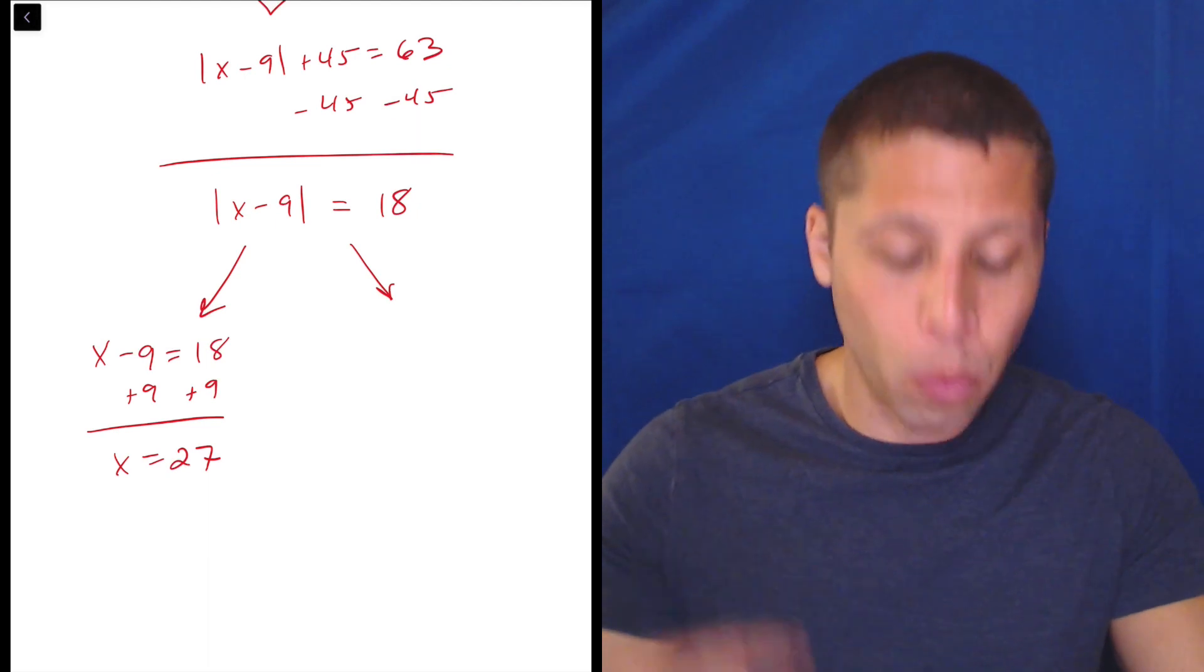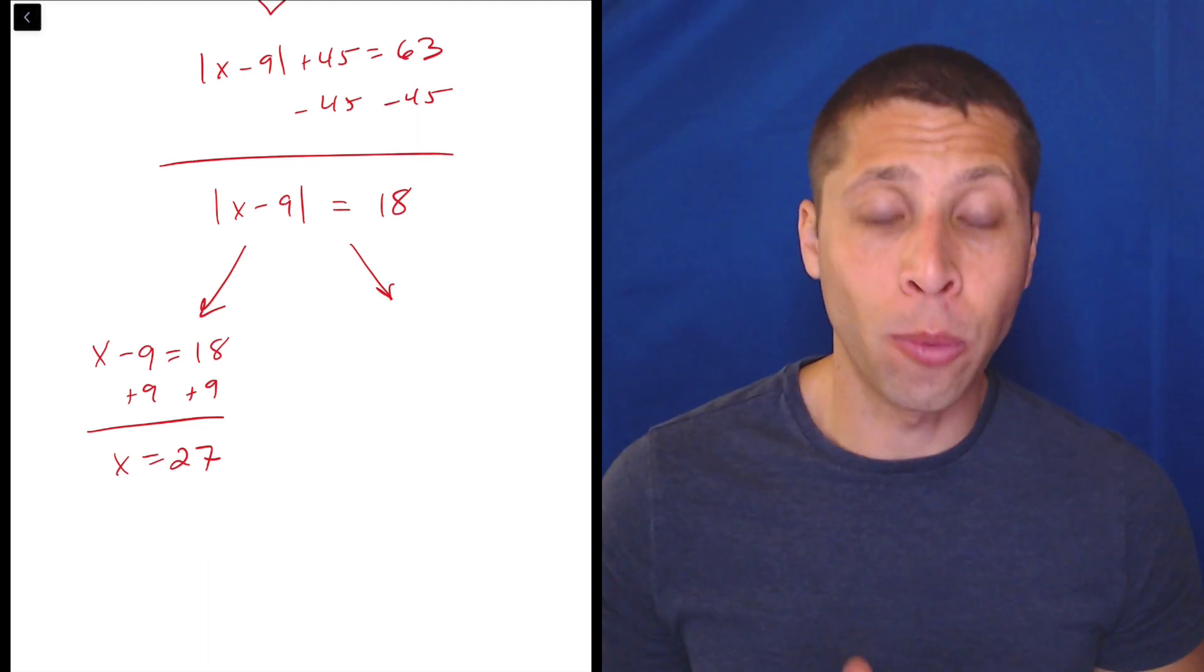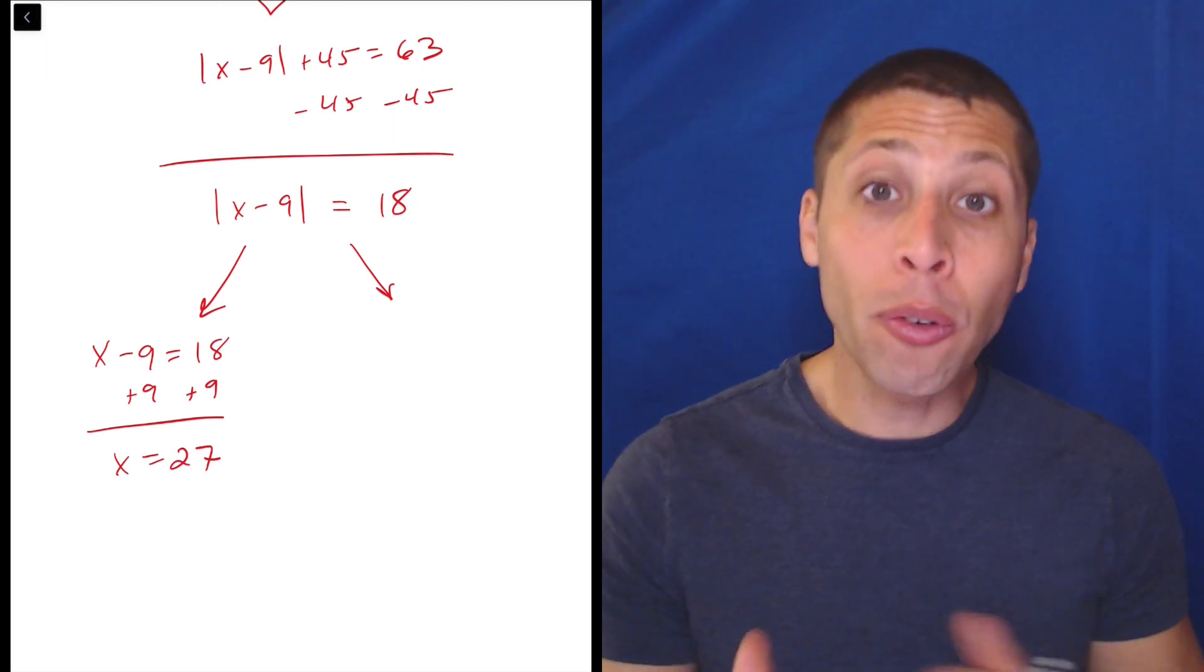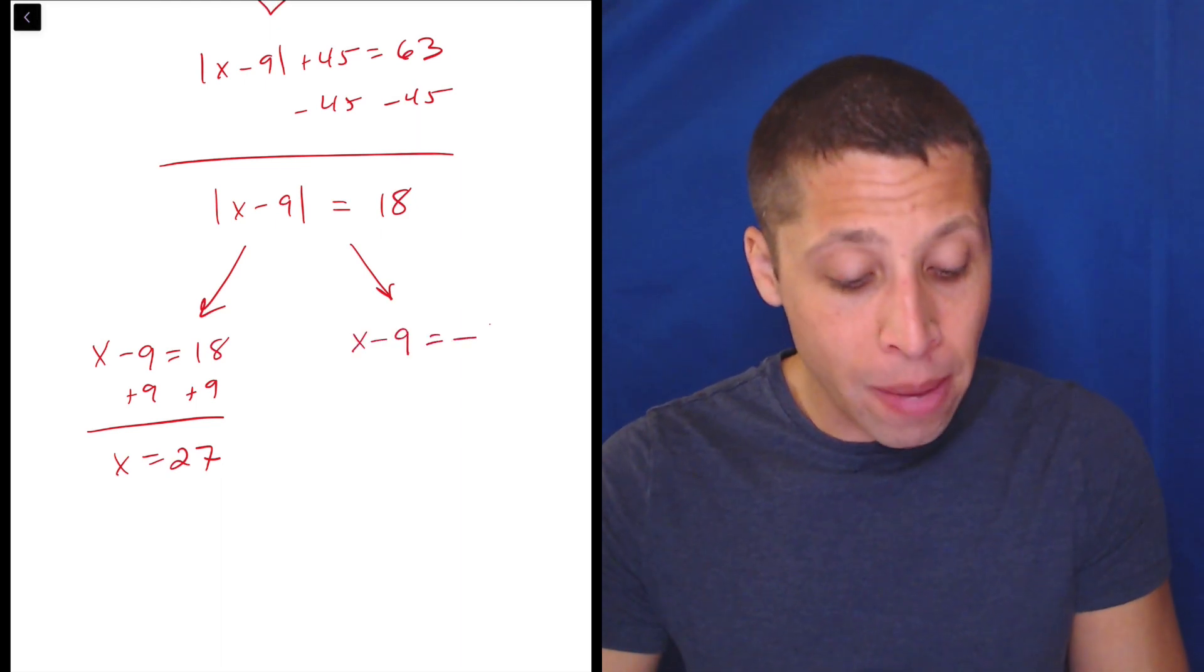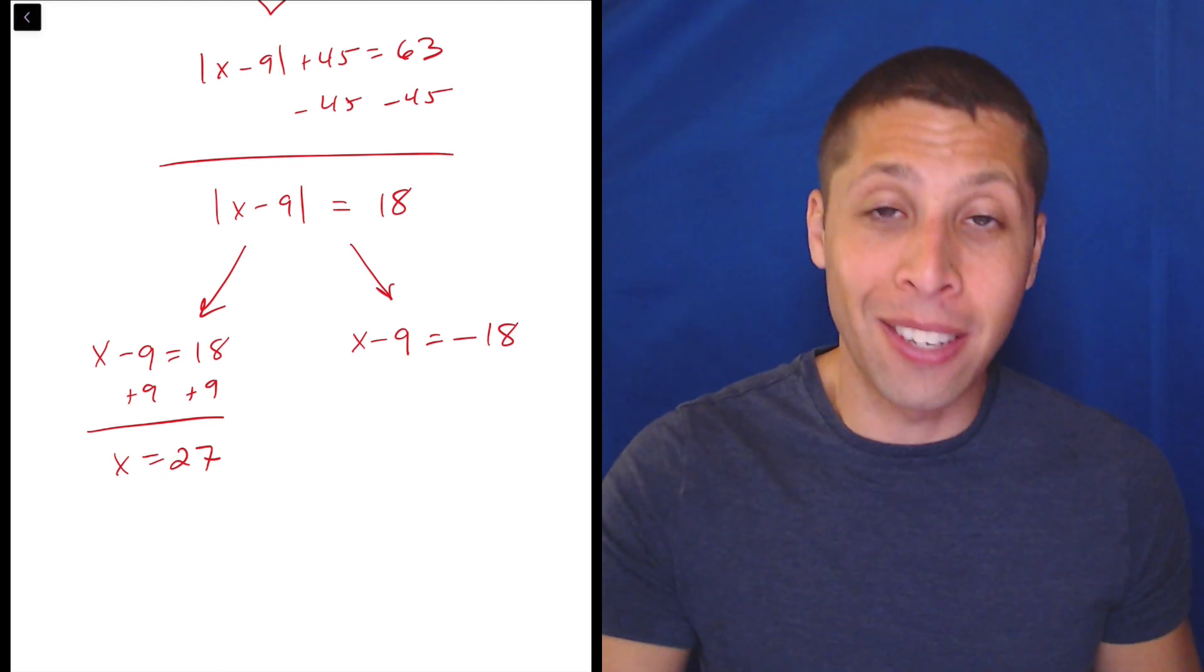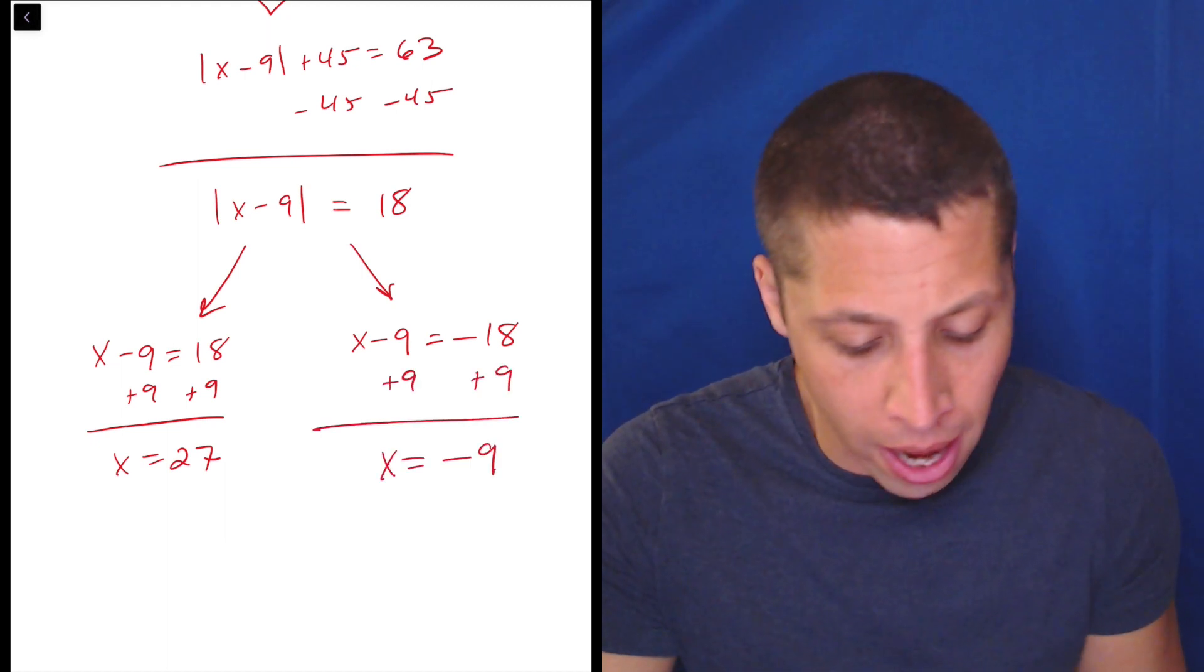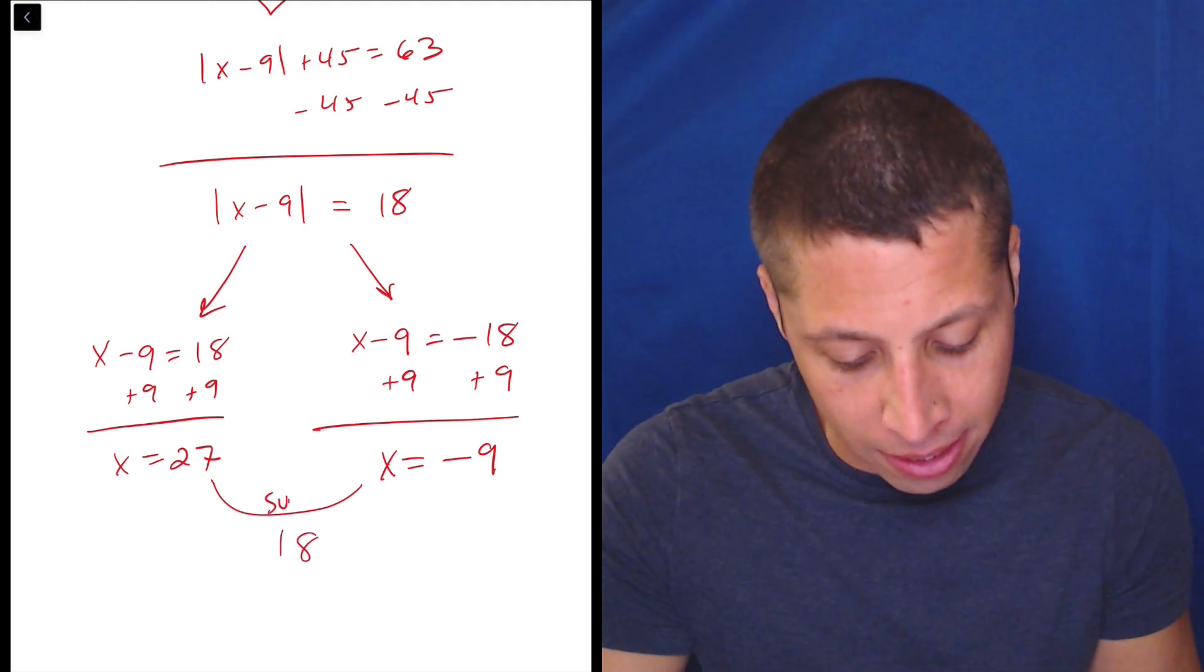For the other, we have to remember what absolute value bars do. If x minus 9 were negative 18, then the absolute value bars would wipe away the negative and make it positive. So we have to account for that. And so that just means we take our x minus 9, and we make it equal to negative 18, the other value that would have produced a positive 18 from these absolute value bars. So now, when we add the 9 to both sides, we get x is equal to negative 9. And those are our two solutions. And again, the sum would still be the same. The sum is 18.